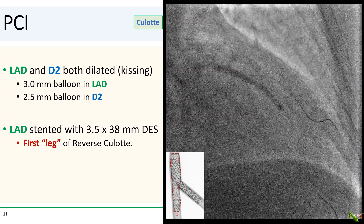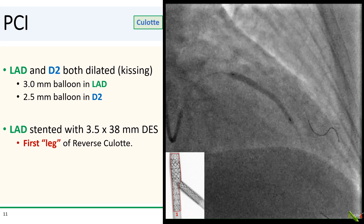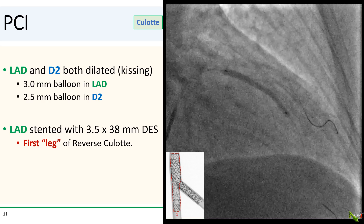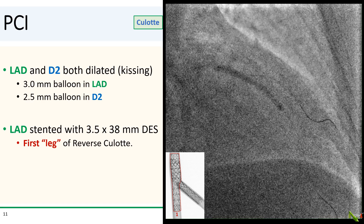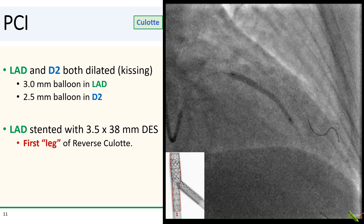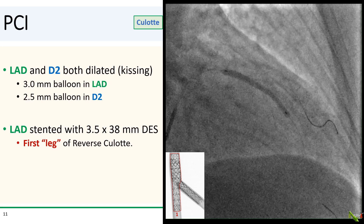All right, so here we go. The LAD and D2 were both dilated with kissing balloon angioplasty. We then stented the LAD with a 3.5 by 38 mm DES, and this forms the first leg of the culotte. Again, I'm doing reverse culotte here even though I was planning from the beginning on a two-stent strategy.